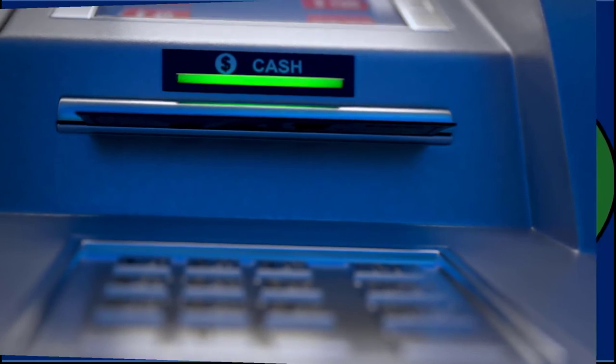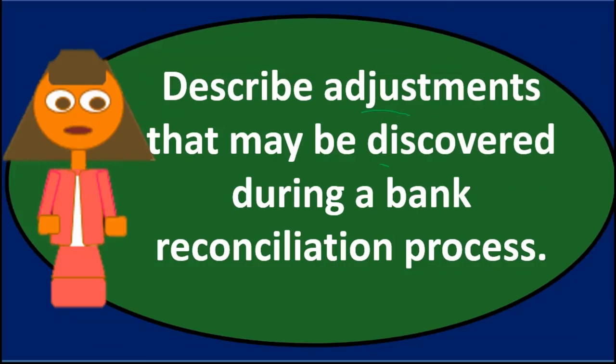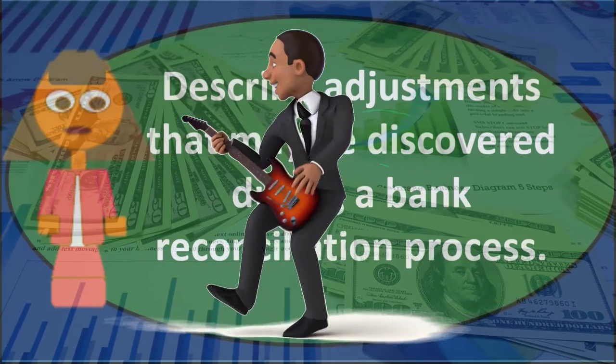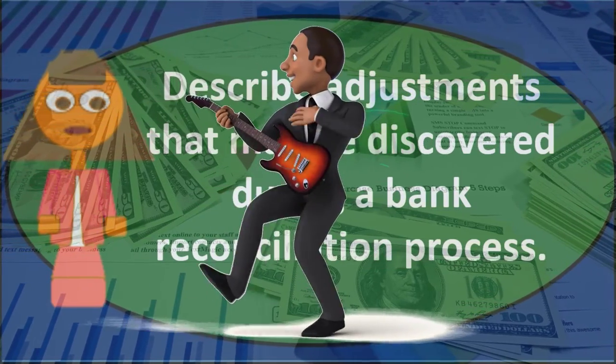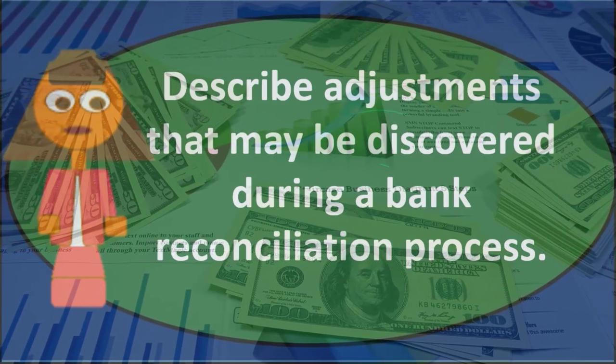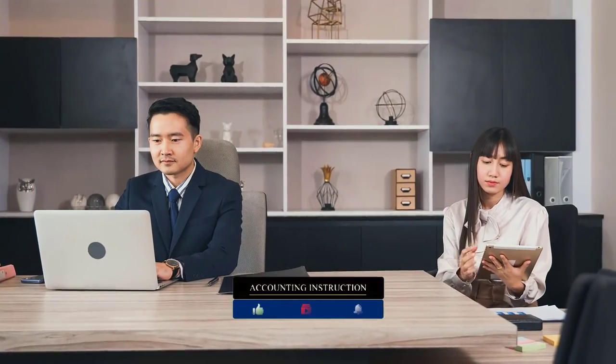It's also possible to have electronic transfers made directly out of the bank that we haven't yet recorded. Smaller companies especially may do many electronic transfers and only record them when they get the bank statement at month end, rather than when each transfer is made. Ideally we'd record the transfer at the point of payment, but if we haven't, we'll need to record those items — decreasing the checking account and recording the related expense for any electronic payments made during the period.